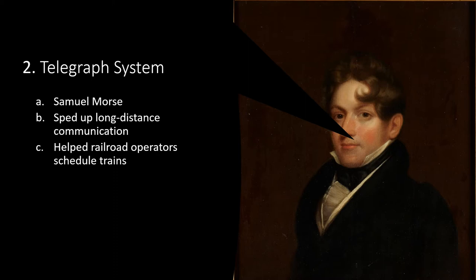The most important advance in communication was the national electromagnetic telegraph system, invented by Samuel F.B. Morse. In 1844, Morse sent his first telegram message from Washington, D.C. to Baltimore, which read 'What hath God wrought,' transmitted as a series of dots and dashes — hence Morse code. The telegram helped railroad operators schedule trains more precisely to avoid collisions, and also put the Pony Express out of business.